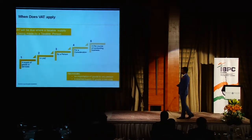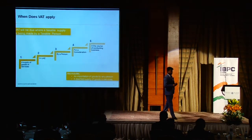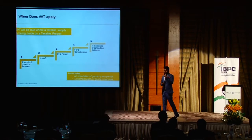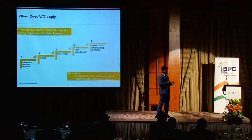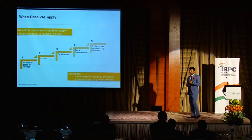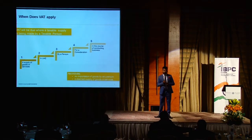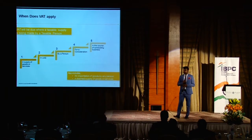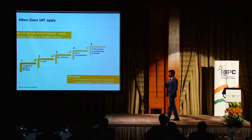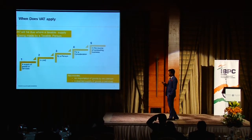The VAT will be due where a taxable supply is made by a taxable person. A taxable person is someone who provides taxable goods above a particular threshold — if a person's turnover is above AED 375,000, or voluntarily registering with turnover above AED 187,500, they become a taxable person. Anything which is not exempt is basically a taxable supply.